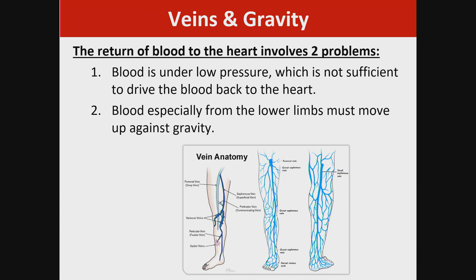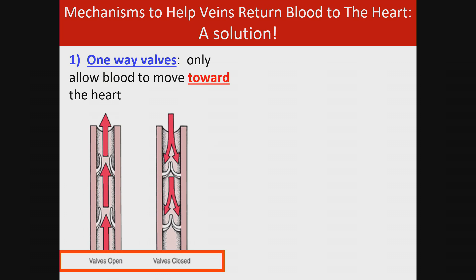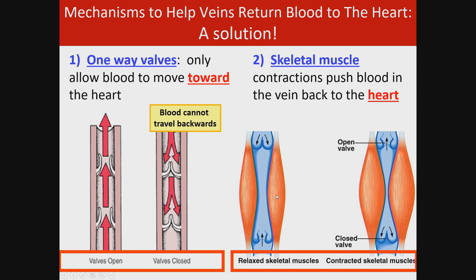The return of blood to the heart involves two problems. Blood is under low pressure, not sufficient to drive it back to the heart, and blood from the lower limbs must move up against gravity. Two solutions: first, one-way valves only allow blood to move toward the heart — the valves open so blood flows up, and cannot flow back down. Second, skeletal muscle contractions push blood in the vein back to the heart. When skeletal muscle contracts, it narrows the vein, and because blood can't move down, it has to move up.